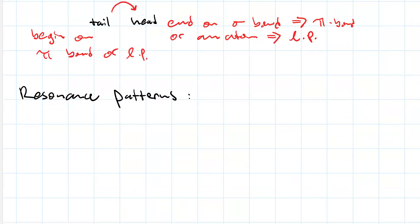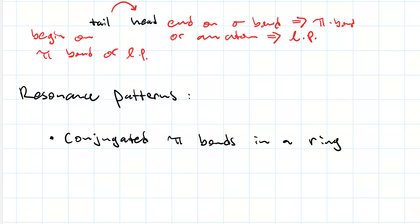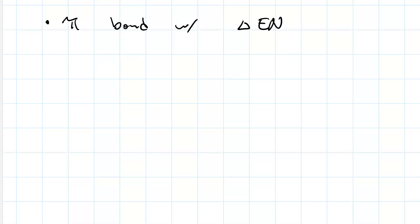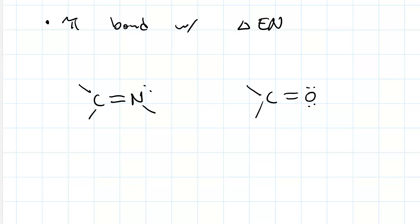We already saw conjugated pi bonds in the benzene ring with three curved arrows that all go pi bond to pi bond. Now let's look at another pattern: a pi bond between atoms with different electronegativity — pi bond with delta EN for short. One example might be a pi bond between carbon and nitrogen, or a pi bond between carbon and oxygen. In both cases, you have a resonance structure where the pi bond electron pair becomes a lone pair on the more electronegative atom. The curved arrow would look like this, or like this.